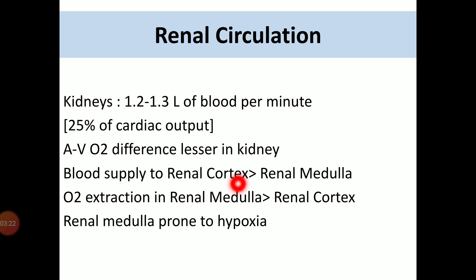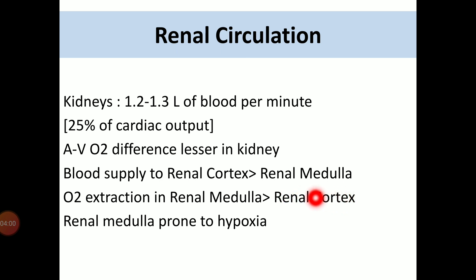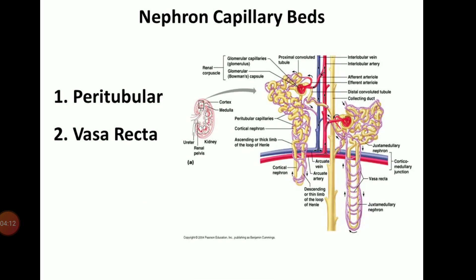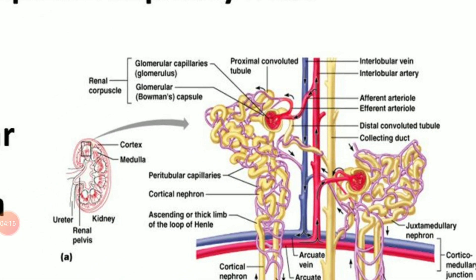The major blood supply of the 1.2 to 1.3 liters is towards the renal cortex, because the cortical nephron constitutes 80 to 85% in comparison to the juxtamedullary nephron which is only 15%. However, the juxtamedullary nephron is associated with concentration or dilution of urine. Due to the many metabolic processes involved, though there is only 15% juxtamedullary nephron, the oxygen consumption and oxygen extraction in the renal medulla is comparatively higher than in the cortex. So whenever there is hypoxia, the renal medulla and juxtamedullary nephron are prone to damage.